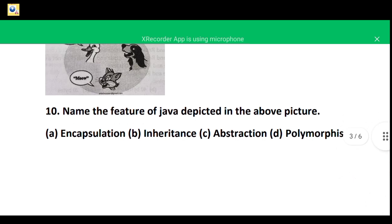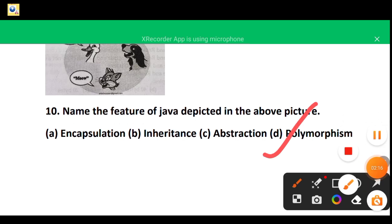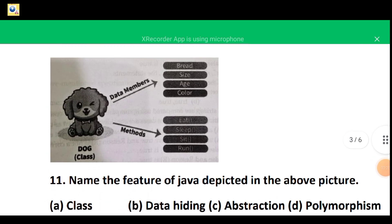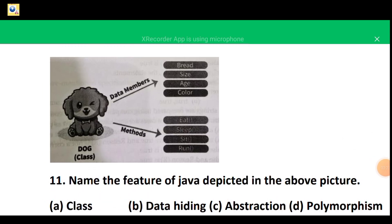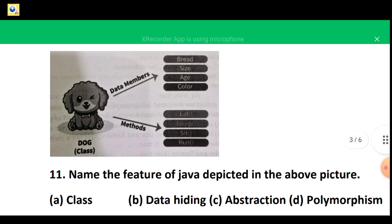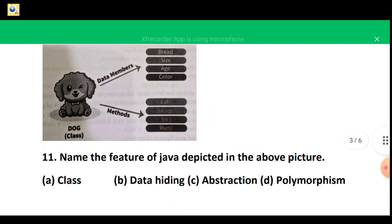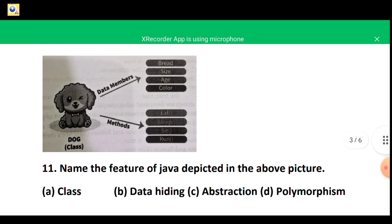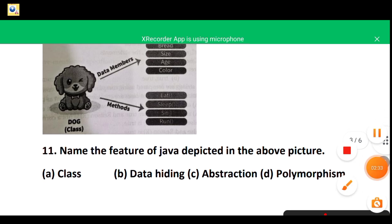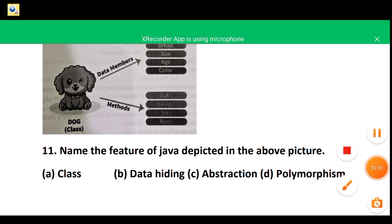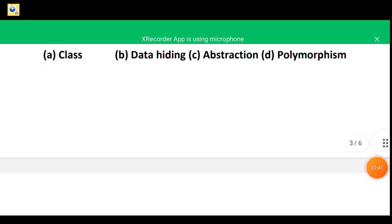Question number 11: there is a dog, and the class Dog contains some data members and some methods. A class contains two basic things — members and methods. So the dog here represents a class, and the correct option is A — class.